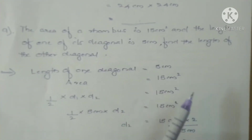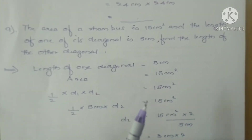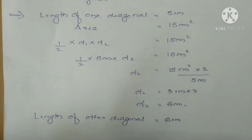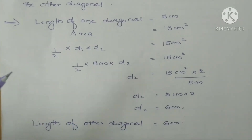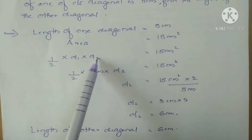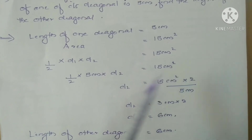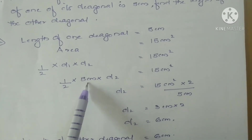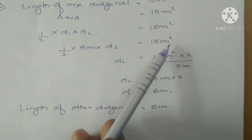First, we write down the given values: length of one diagonal is 5 centimeters, and area is 15 centimeters square. Since area is given, we write down the formula. The formula for finding the area of a rhombus is half into D1 into D2, where D1 and D2 are the lengths of the diagonals. Substituting the given values: half into 5 centimeters into D2 equals 15 centimeters square.